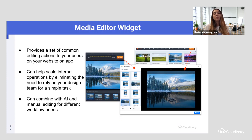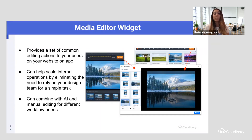You don't want to bug your design team with something as simple as changing the width and height of your asset. The media editor widget provides a way to do that directly, or simply apply transformation presets that have been generated for common transformations. It can also combine AI and manual editing for the different workflows you may have.